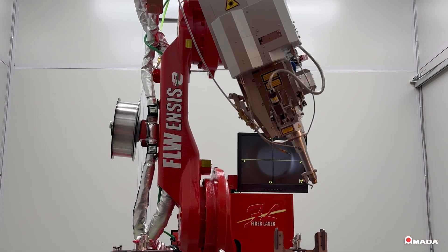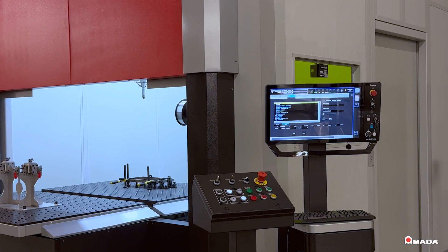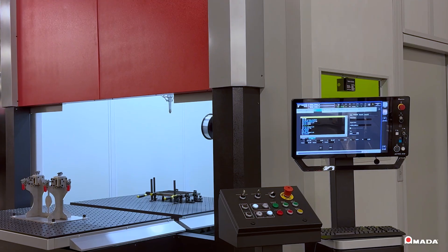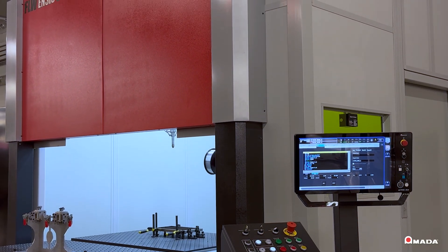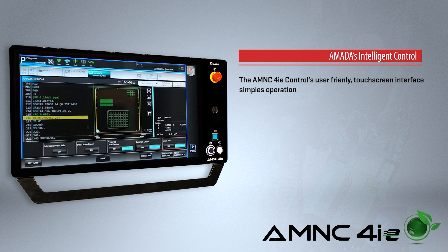This multi-axis robot is controlled through a network-ready AMNC-4iE control, which rests outside of the laser safety cabin. A touchscreen control with a user-friendly interface simplifies operation and maintenance on the FLW.